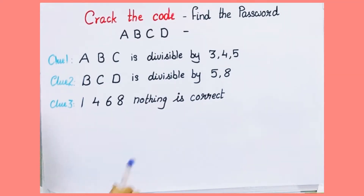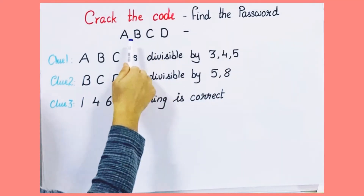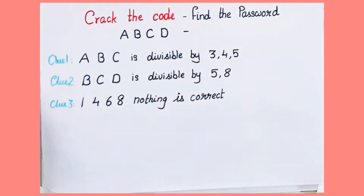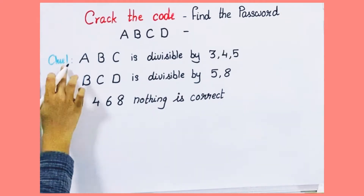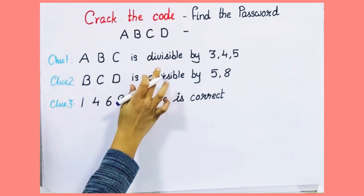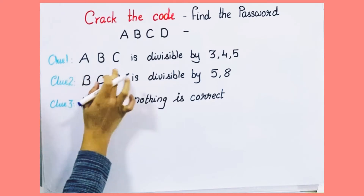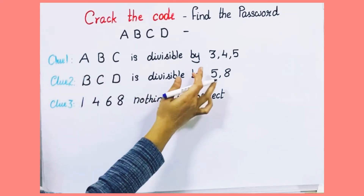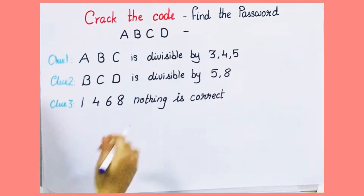Track the code. Find the password ABCD using these 3 clues. The first clue says that ABCD is a number where ABC is a number divisible by 3, 4, and 5.